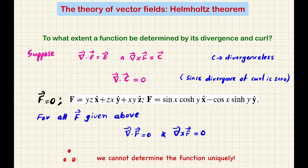A vector function — it can be the electric field or the magnetic field. So my question here is: to what extent can a function be determined by its divergence and curl? That is, given a vector function, how accurately can it be determined from its curl and divergence?